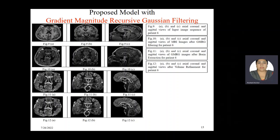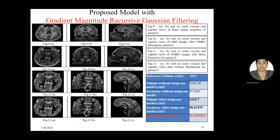This slide shows the proposed model with gradient magnitude recursive Gaussian (GMRG) filtering results. The first row shows the input image sequence, the second row shows images after applying GMRG filtering, the third row shows results after brain extraction, and the last row shows results after volume refinement. The reference volume remains 1333 cm³ for patient number 6. Without the model, volume and accuracy were 1162.16 cm³ and 87.16% respectively. When the proposed model with GMRG filtering is applied, the newly calculated volume becomes 1350.7 cm³ and accuracy becomes 98.67%, representing an 11.51% increment in accuracy.